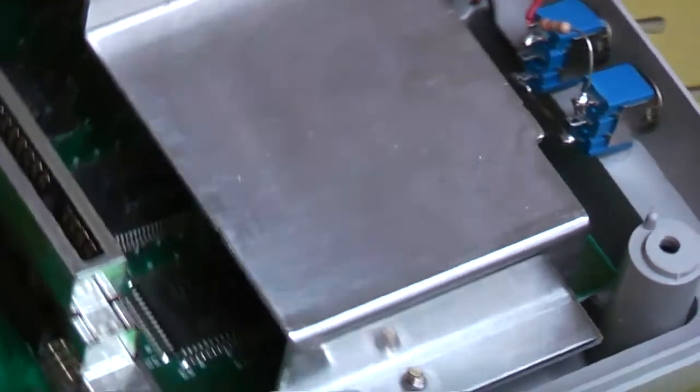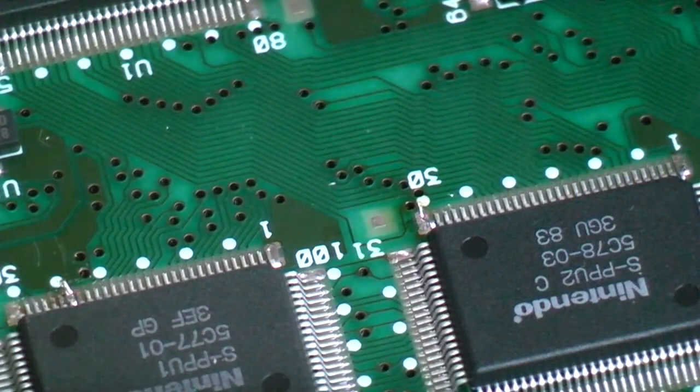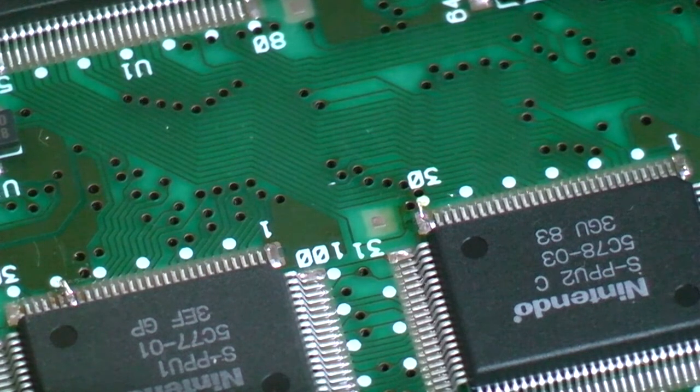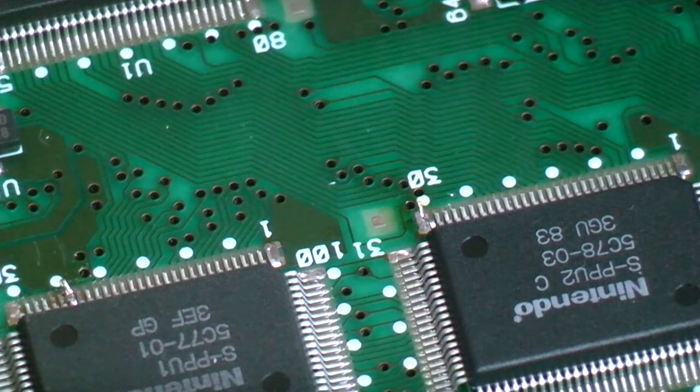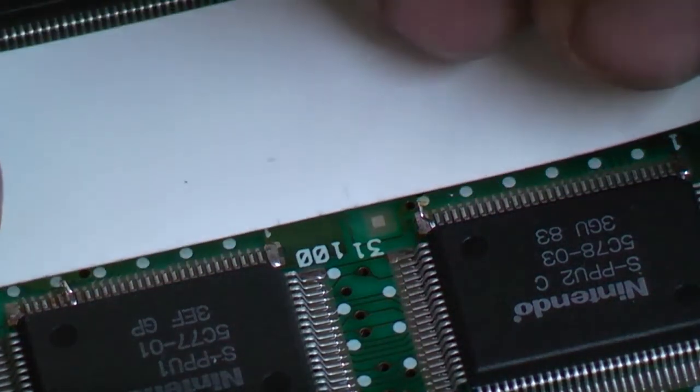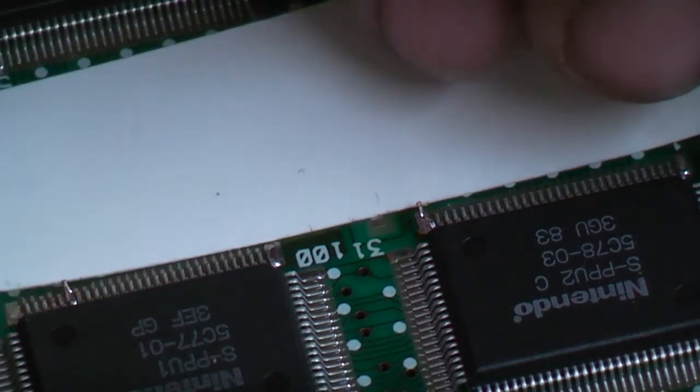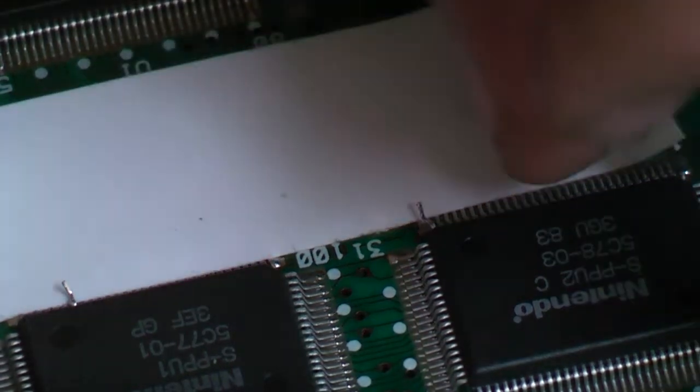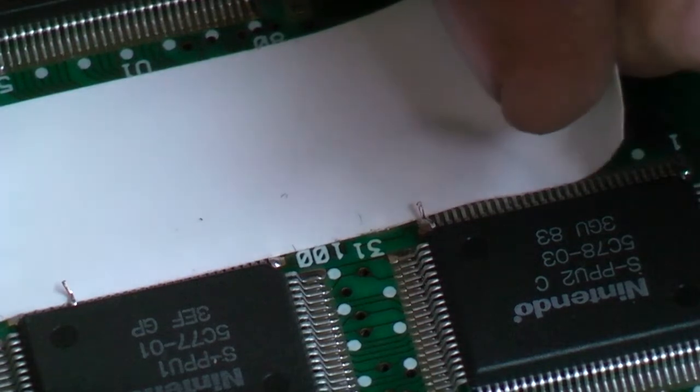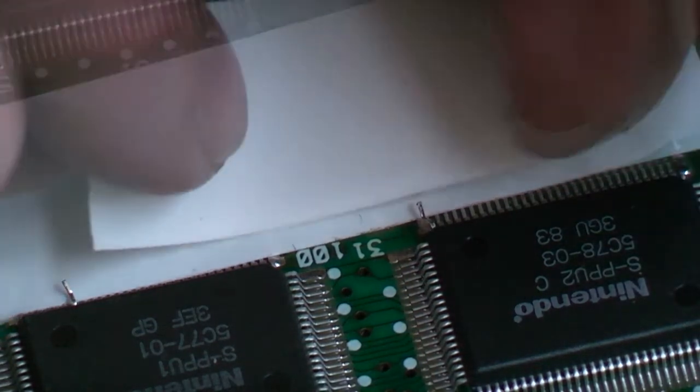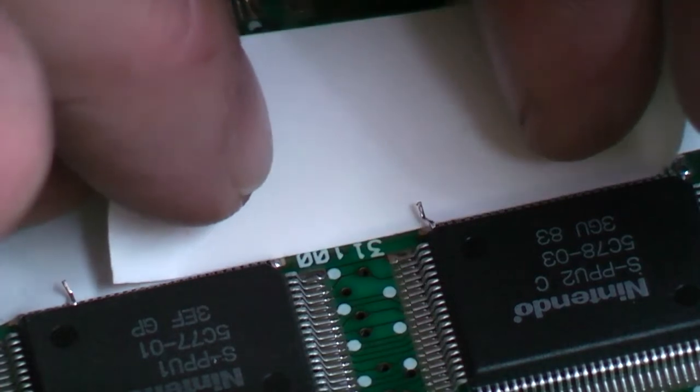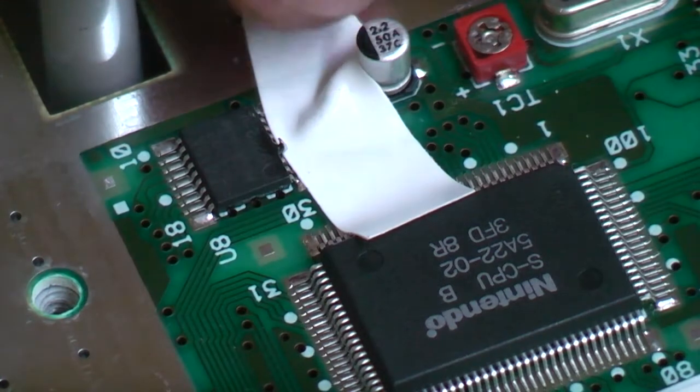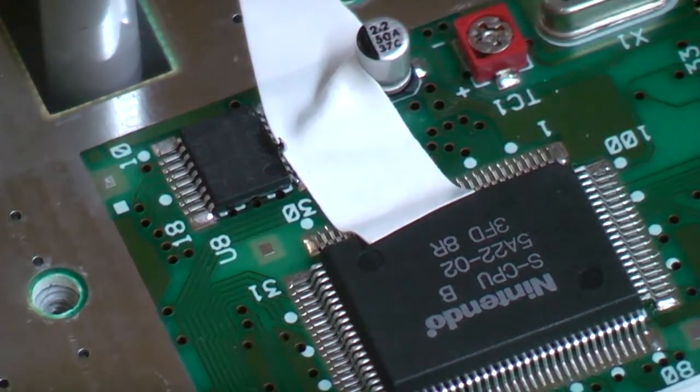So now we need to solder onto the two chips that we lifted the legs on. Before we attach to these two PPU chips with our wire, we're just going to take a little bit of precaution and put some insulation tape just down on the contacts, because we're going to rest a wire across them and we don't want to touch any of the other legs.